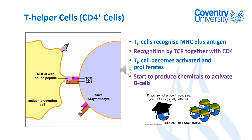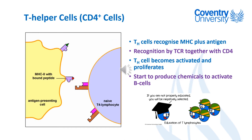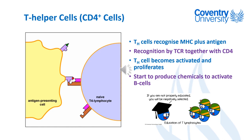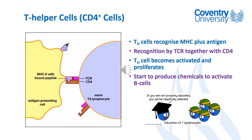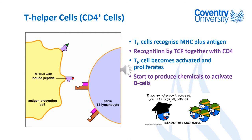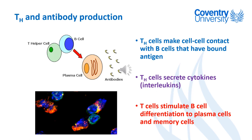T helper cells can't kill things by themselves but will start to produce cytokines — chemicals — which then help activate B cells to produce antibodies, again specific for that pathogen. T helper cells and B cells are basically best friends — they do a little fist bump. The T helper cell produces cytokines to activate the B cell, they join together, and that helps the B cell mature and start producing lots and lots of antibodies.